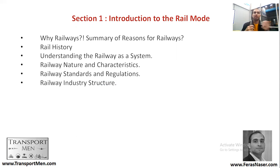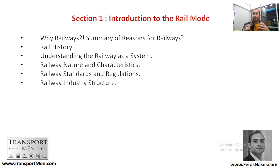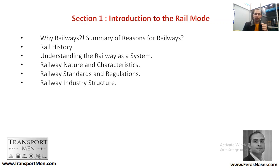Finally, we'll be talking about the railway industry structure: what is an operator, what is an infrastructure owner, what is a regulator, what is a government agency, and what is a manufacturer or supplier of trains or train control. We need to understand how these different entities within the rail industry interact with each other.